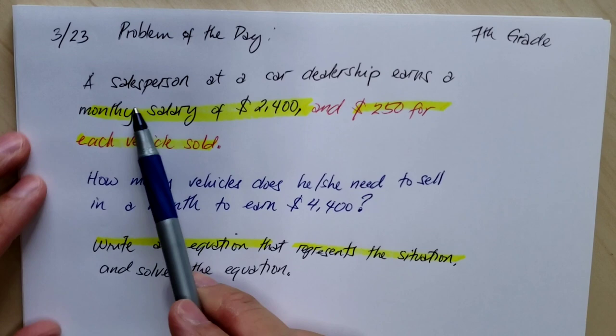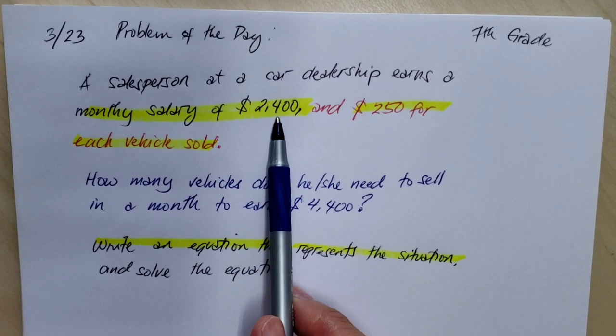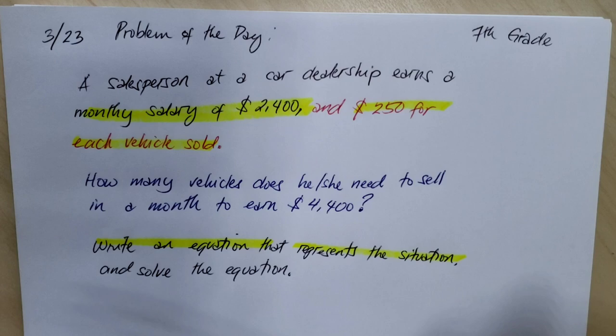Hello students, the problem of the day says that a salesperson at a car dealership earns a monthly salary of $2,400 and $250 for each vehicle sold. This would be what we call a commission.